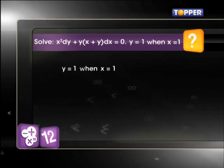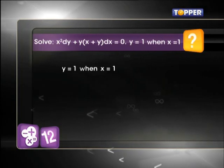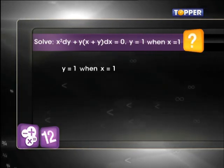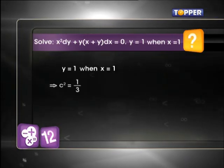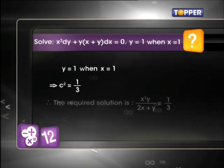For the last one mark, we find the value of the constant at x = 1 and y = 1. We get c² = 1/3.